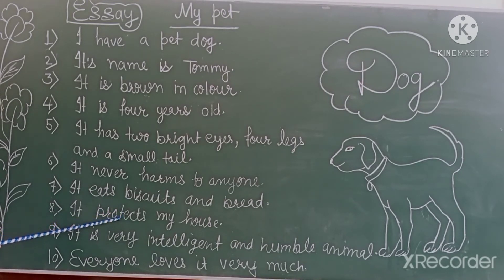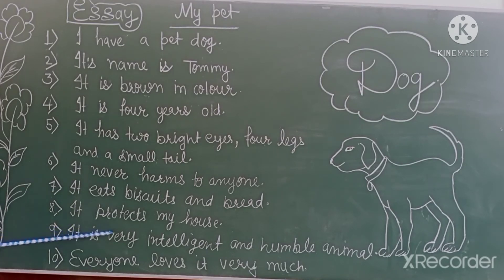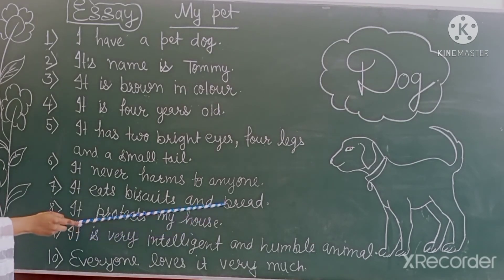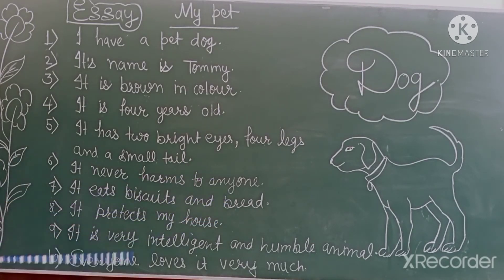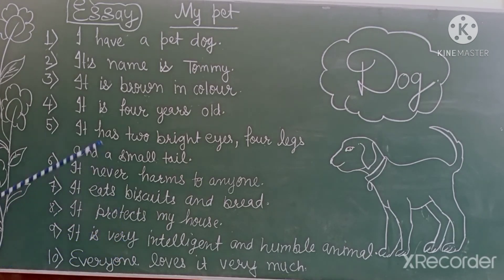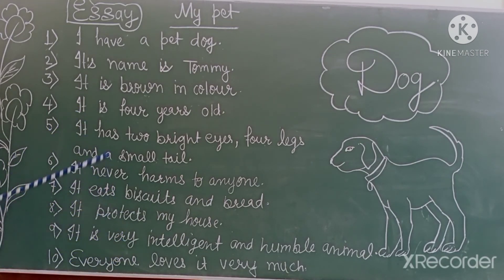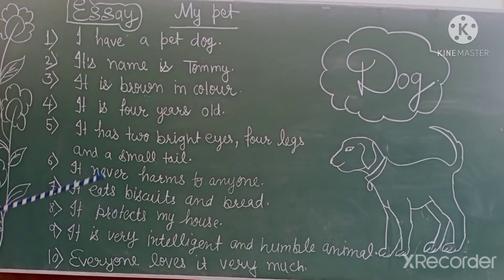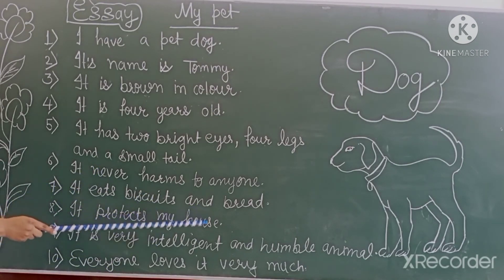Next is: It is very intelligent and humble. Humble kya hota hai? Intelligent matlab hoshiyaar. Aur humble kya hai? Humble bhi hoshiyaar aur vinaram hona.